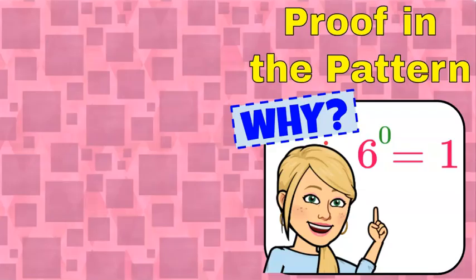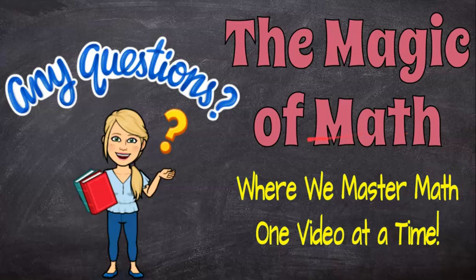And that's it. That's what I have for you today and the proof in the pattern. And that is why any nonzero base with an exponent of zero is equal to one. I thank you for joining me today and I hope you'll come back soon to see the next video about exponents that are negative. Thanks for joining me at the Magic of Math where we continue to master math one video at a time. I hope you'll come back soon and have a great day.